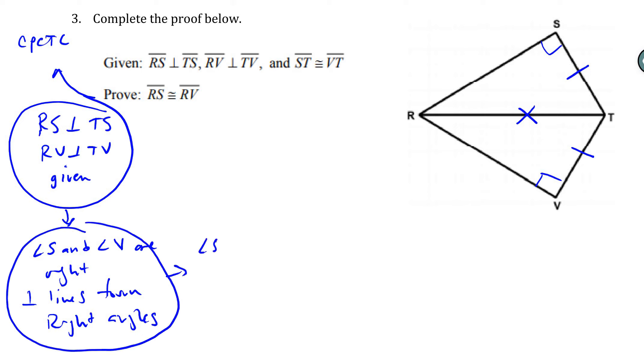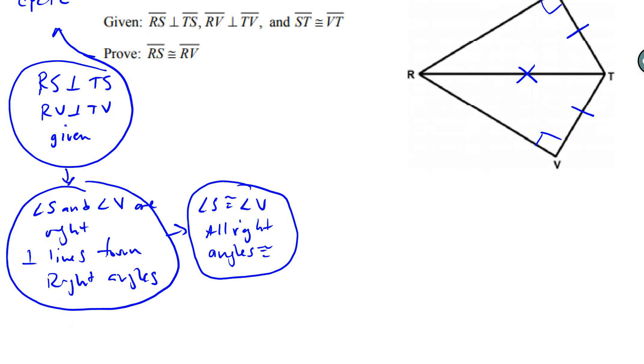And from that, we can say angle S is congruent to angle V because all right angles are congruent. So now I know that I have right triangles, so I can even put that in there.